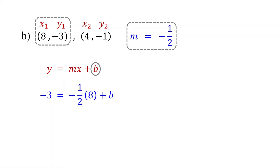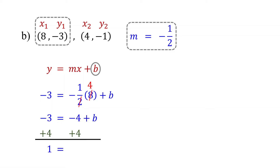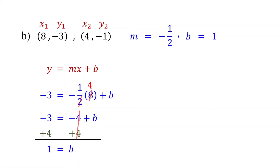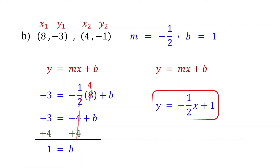Now solve for b. 8 divided by 2 is 4, and negative 1 times 4 is negative 4. Next, add 4 to both sides to isolate b. On the left, negative 3 plus 4 is 1. On the right, these cancel, leaving b. Now that we have the values for both m and b, substitute them back into the slope-intercept form. Replace m with negative one half and b with 1. This is your equation in slope-intercept form.